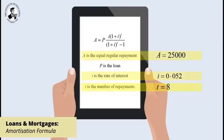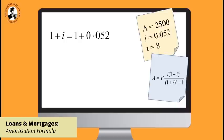Now, substitute these values into the appropriate places in the formula. Note that 1 plus I, in other words 1 plus 0.052, can be written as 1.052. So now, write 25,000 equals. Now, insert the letter P on the right-hand side.